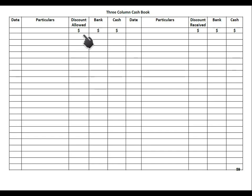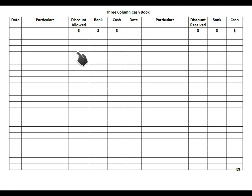Whenever our customers pay us money earlier than they promised, we allow them some discount — this is known as discount allowed. If we pay our suppliers earlier than promised, the discount we receive from them is known as discount received. Discount allowed is an expense for the business, so it appears on the debit side, while discount received is income and appears on the credit side.